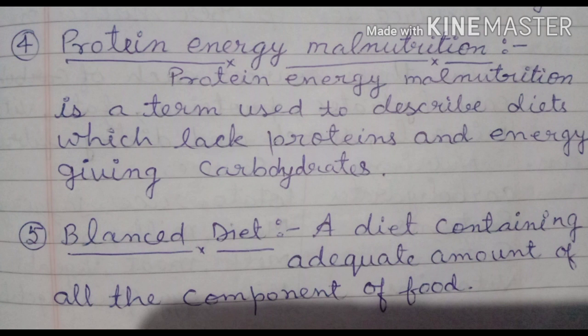Fourth: protein energy malnutrition — protein energy malnutrition is a term used to describe diets which lack proteins and energy-giving carbohydrates. Fifth: balanced diet — a diet containing adequate amount of all the components of food necessary for our body.